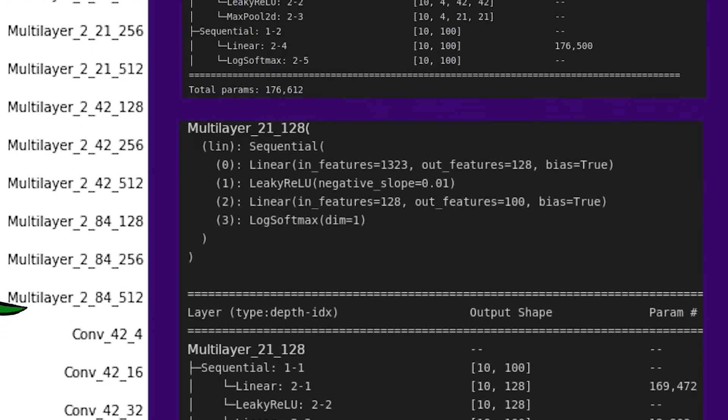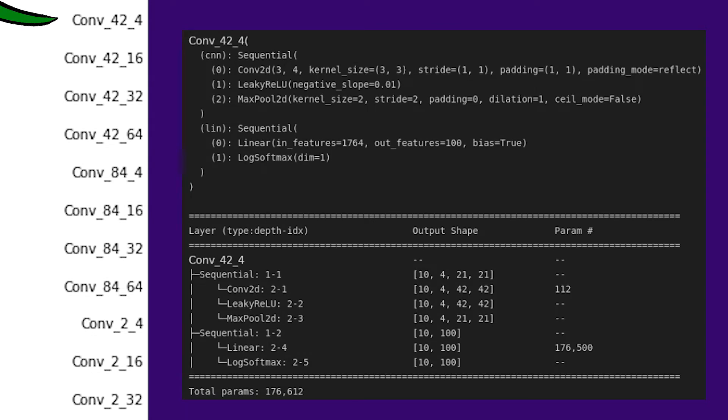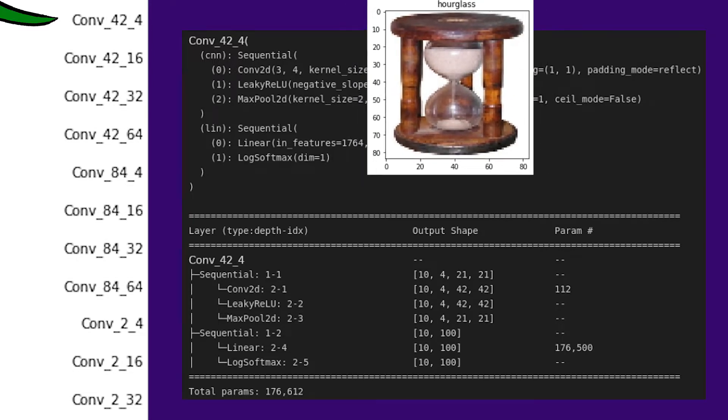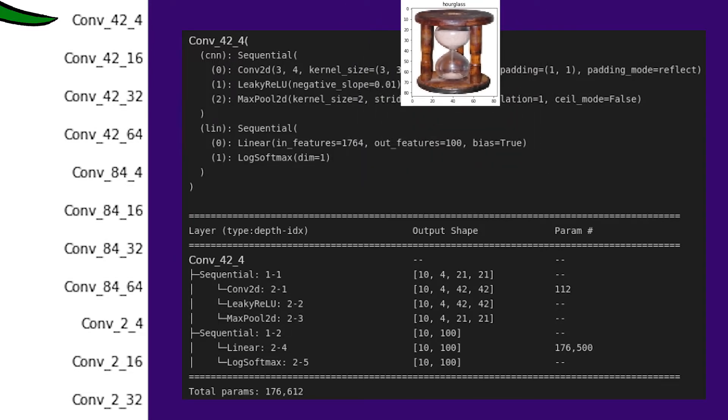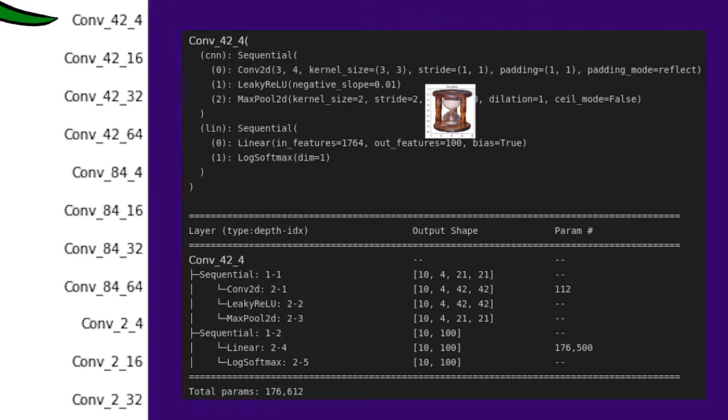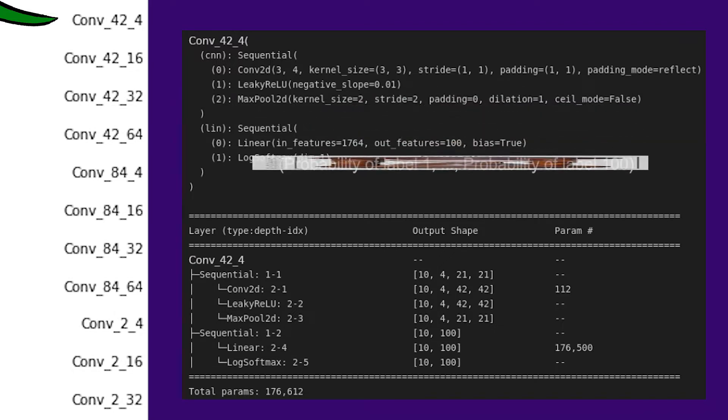After that are convolutional models. I've talked about convolution before. This model I call Conv424, because it resizes the images to 42x42, and feeds them through a convolutional layer with four channels. The 42x42 output goes through max pooling, keeping just the most informative 21x21 parts. That is what's flattened and fed through a linear layer to get 100 label probabilities.